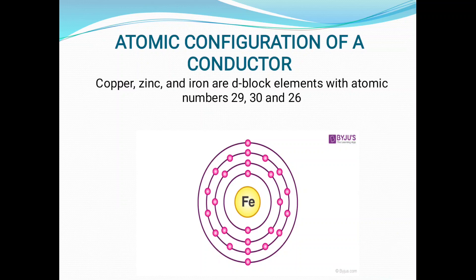Whenever external disturbance is given — thermal energy or light energy — only the outermost electrons, the valence electrons (in this case only 2), are ready to detach from the nucleus. The inner electrons do not show that much interest because the nuclear attraction is much stronger compared to the electrons in the outermost orbit.